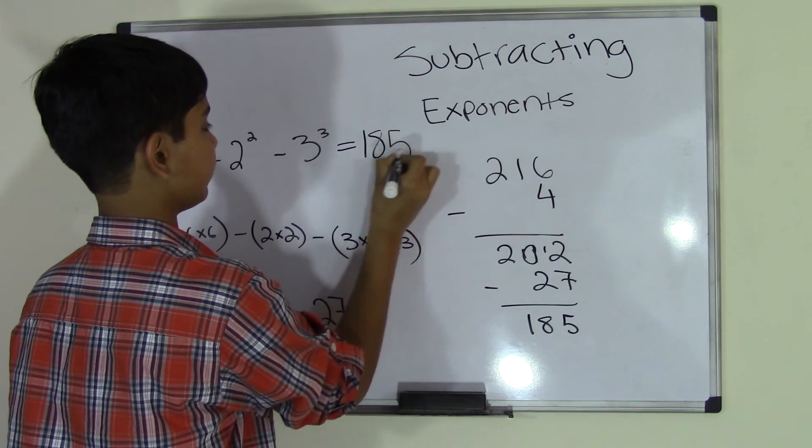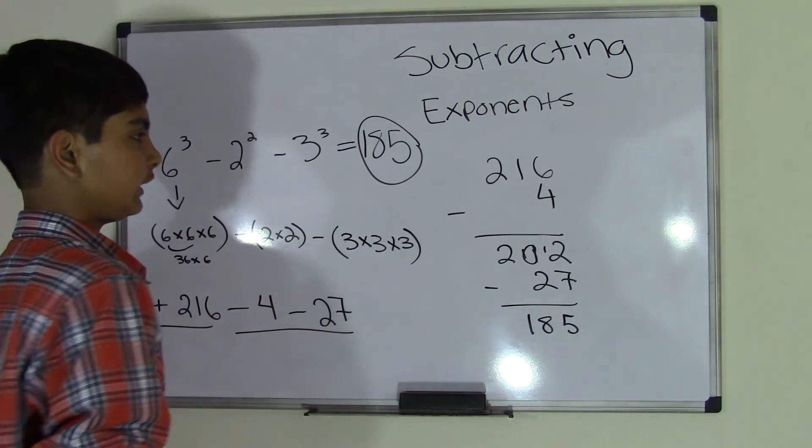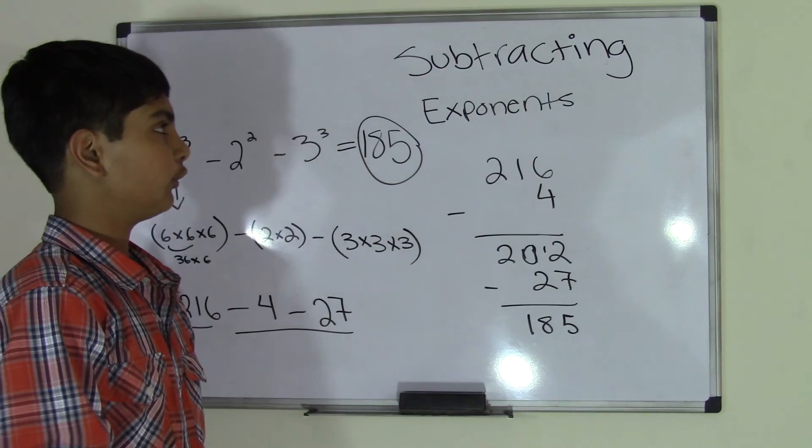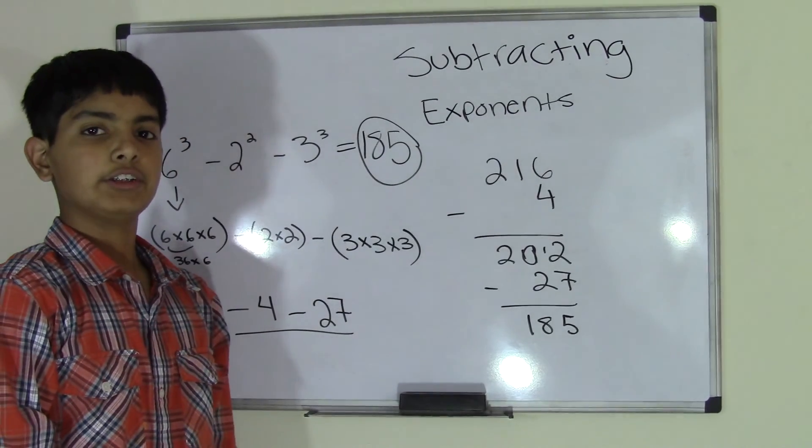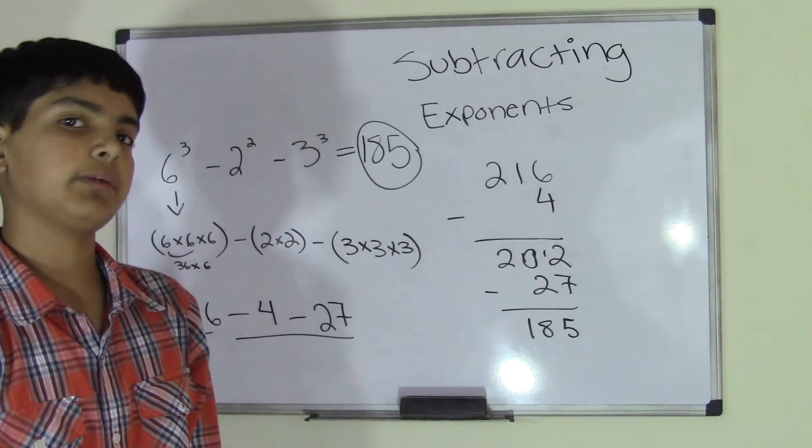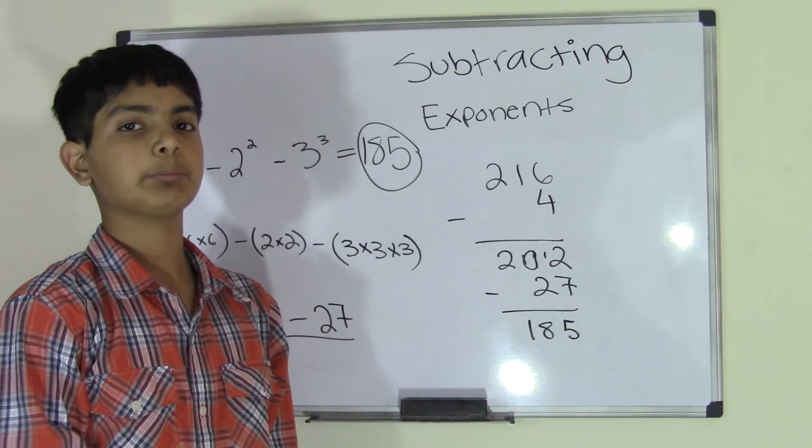We get a difference of 185. See, it's simple as that. We'll see you guys next time on our two other videos coming up on multiplying and dividing exponents.